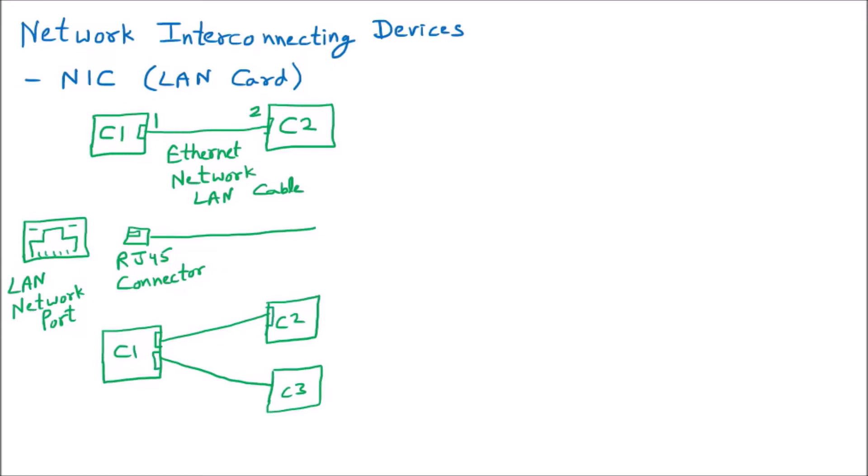We know that the LAN port is the thing through which we get an IP address. If you look at computer C1 with two LAN ports connected, that means C1 will have two IP addresses. Is it possible for a computer to have two IPs? Yes, it is totally possible — two LAN cards can be inserted in a computer, giving two IP addresses. One computer can have more than one IP address if multiple LAN cards are inserted.